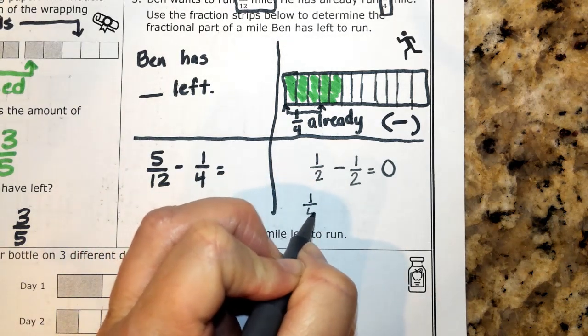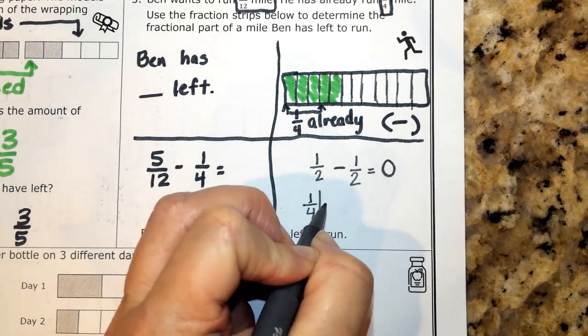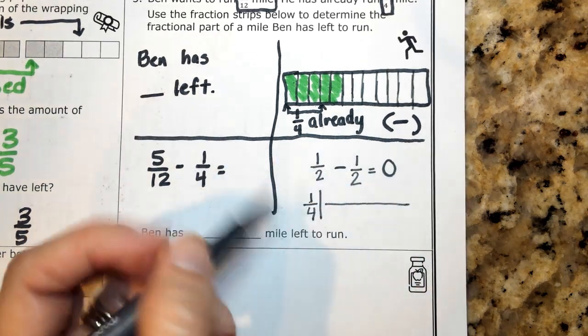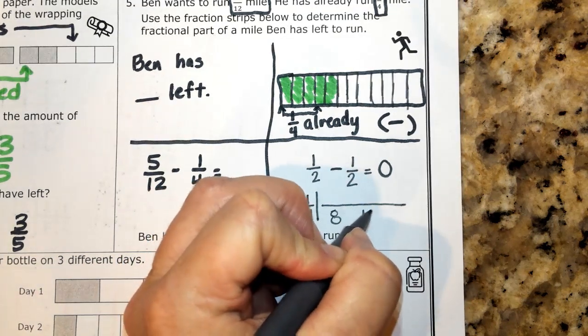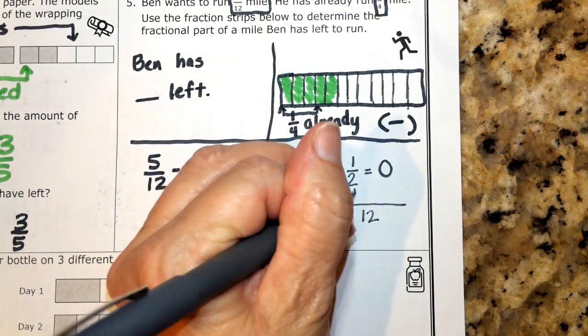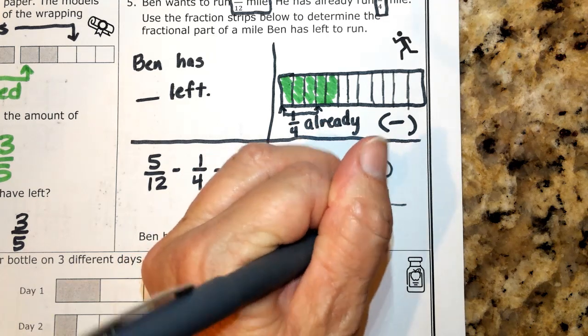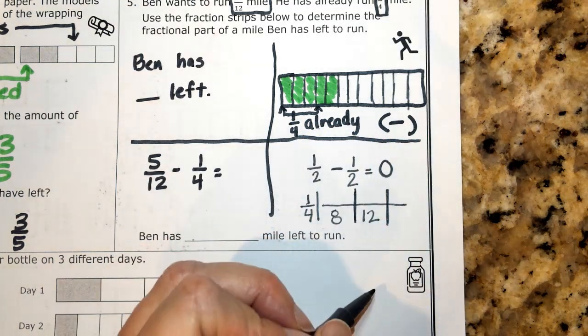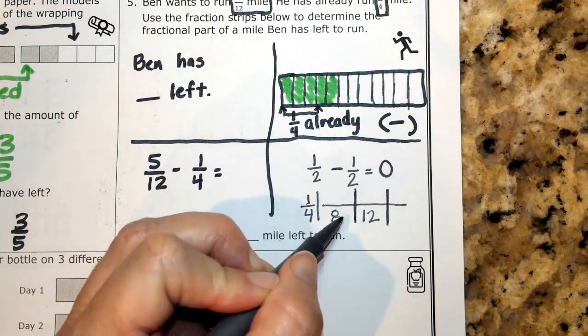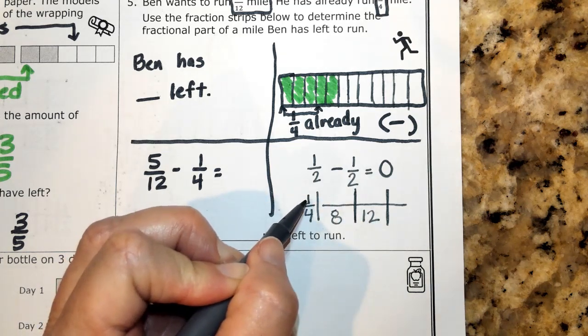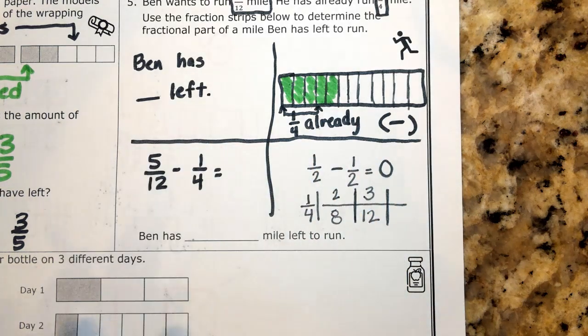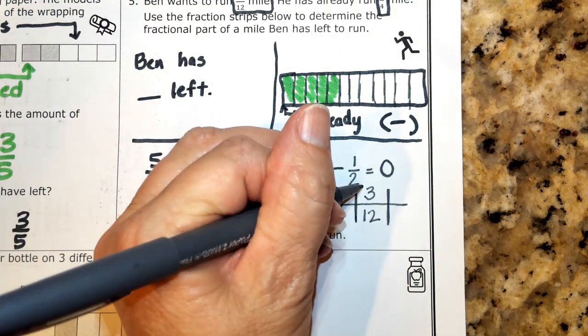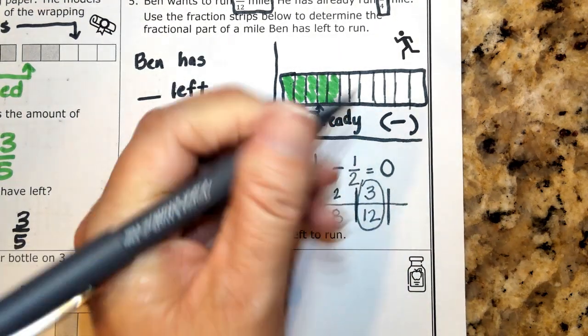So if I have the number 1 fourth, and I count by fours: 4, 8, 12, there it is. I am able to count by fours and get to twelfths. And since I counted by fours on the bottom, I'm going to count by ones on the top: one, two, three. So another name for one fourth is three twelfths.